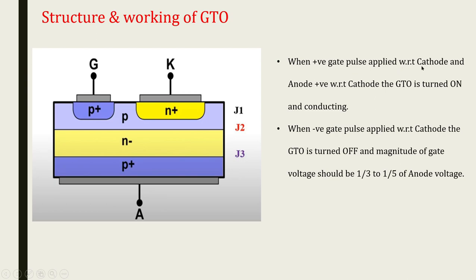When a positive gate pulse is applied with respect to cathode and anode is positive with respect to cathode, J2 turns on and the device conducts. When a negative gate pulse is applied with respect to cathode and crosses the threshold value, J2 turns off. One important thing: the magnitude of the negative gate voltage should be between one-third and one-fifth of the anode voltage while designing the GTO.